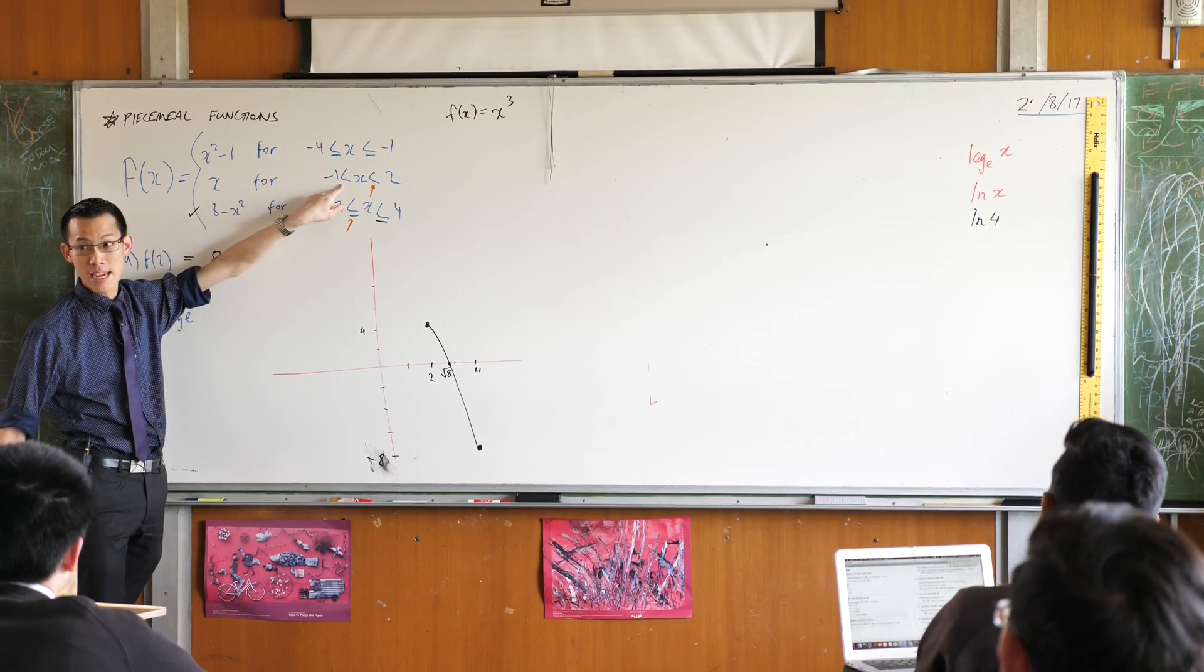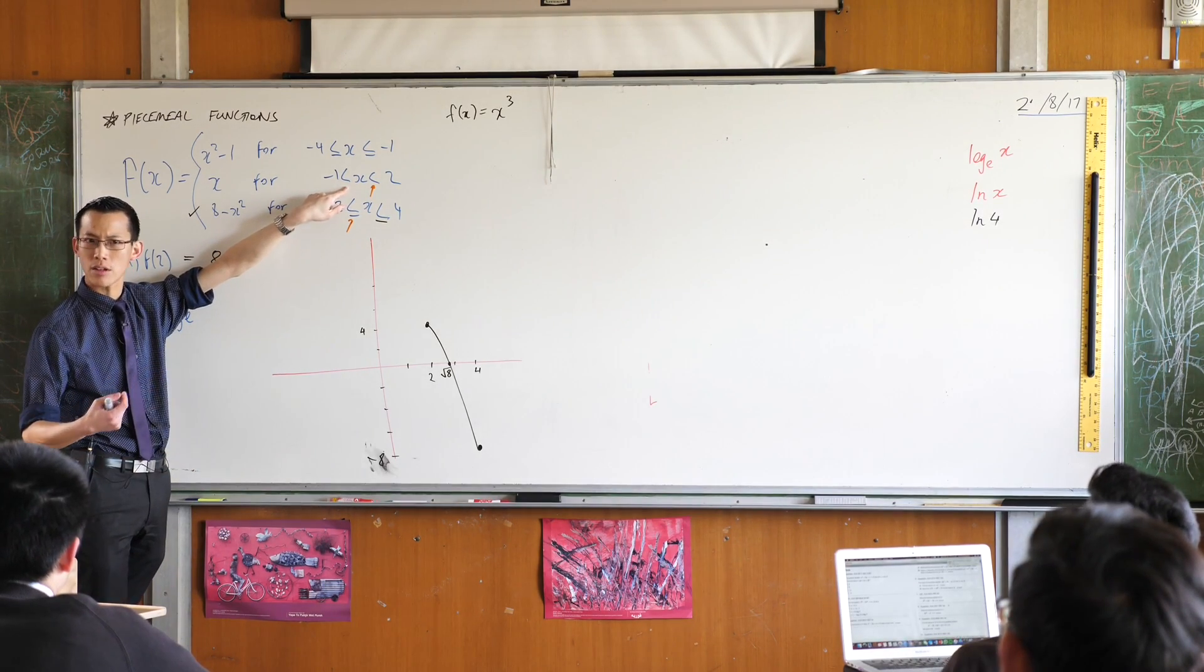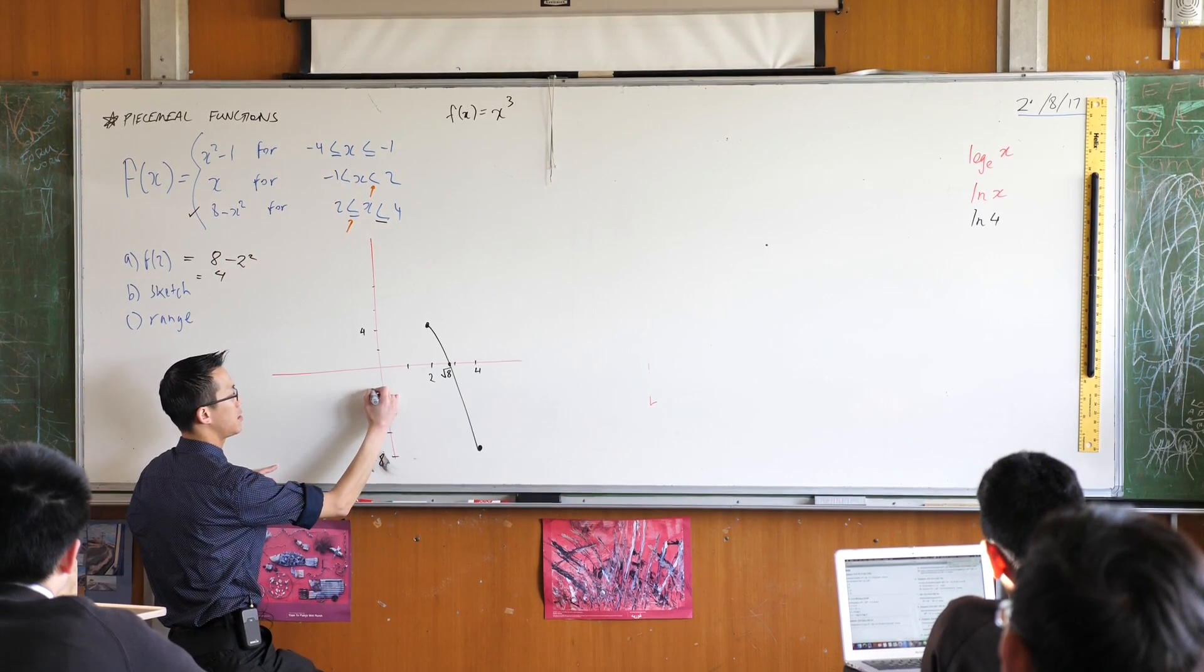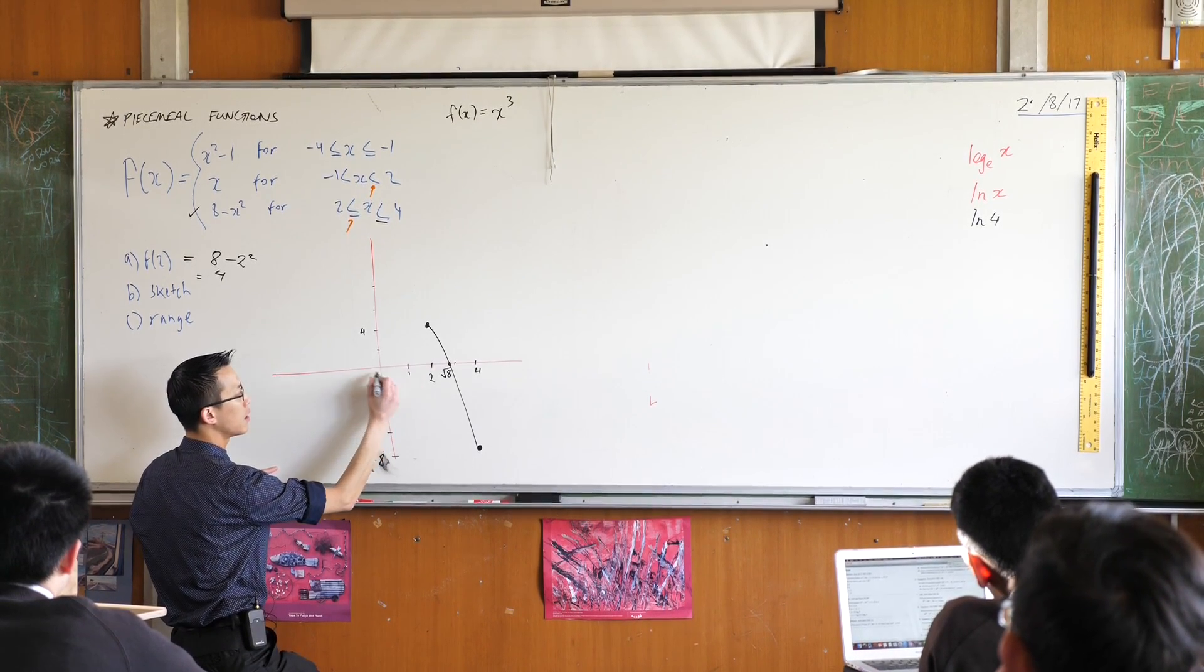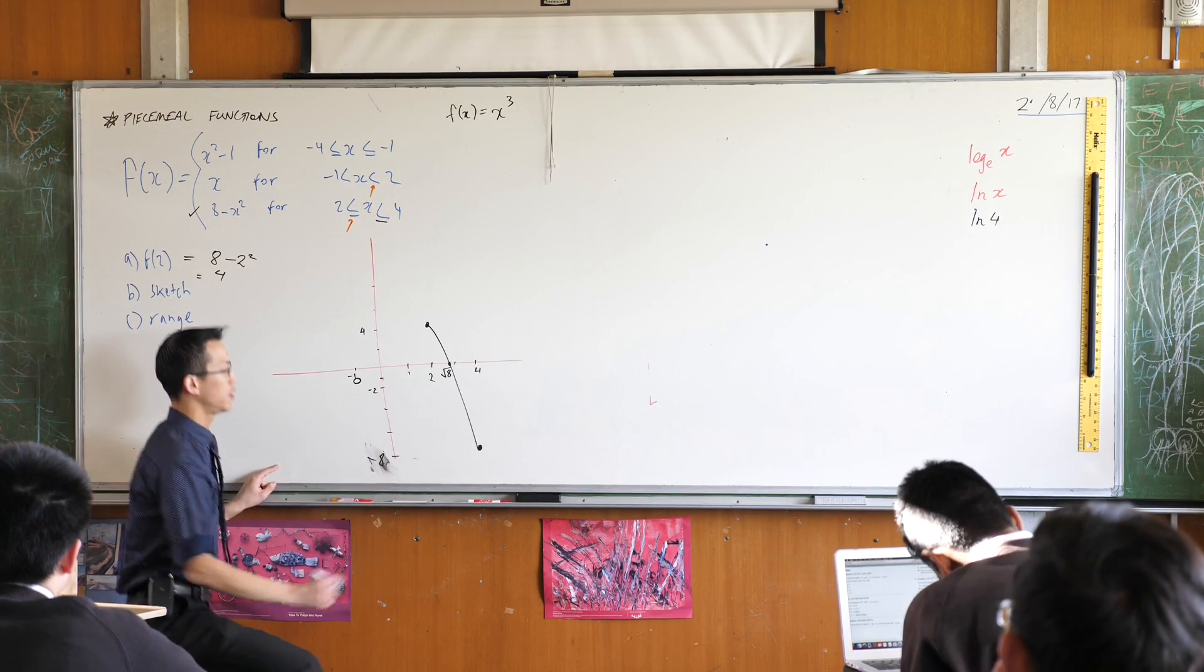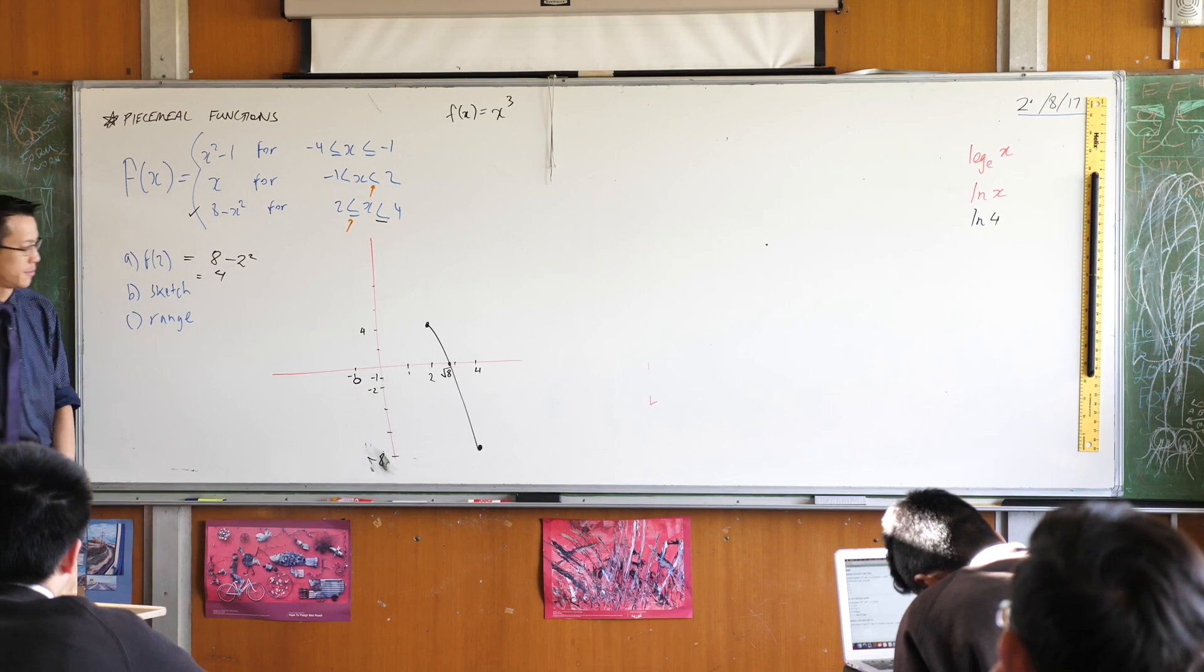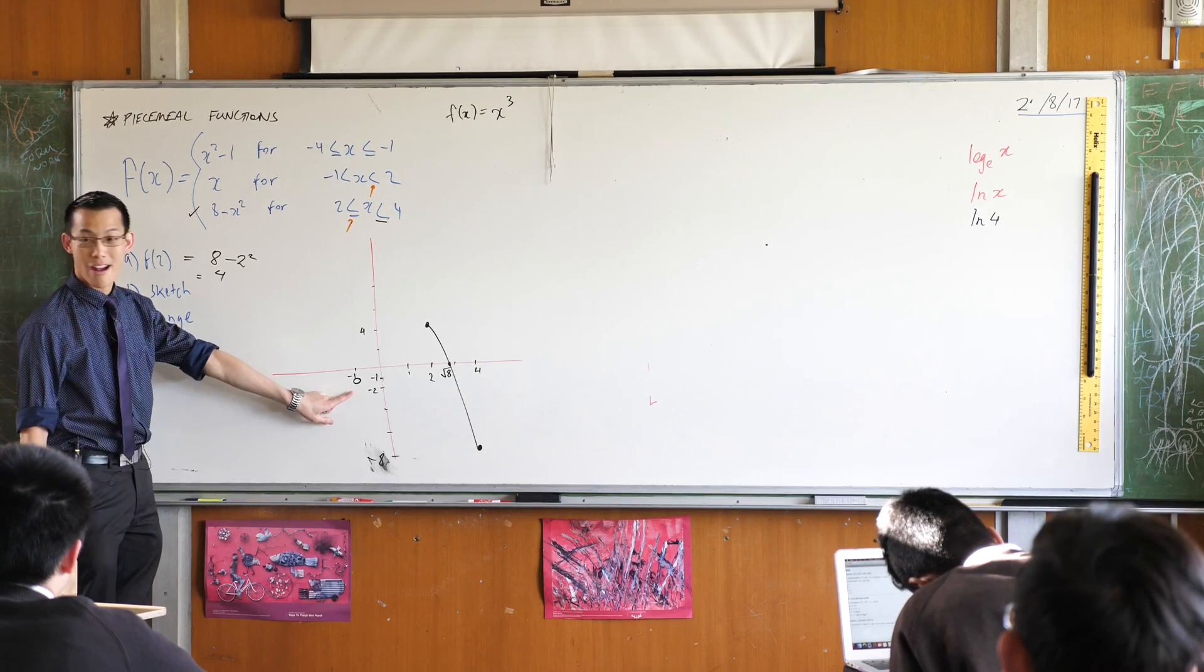But I would be, if I could evaluate that, I would be at y equals negative 1. So I'm going to put a hollow circle there because I'm not actually there. Does that make sense? So what do we say? This is negative 2, so negative 1 would be around here. There's my hollow circle. Are you alright with that? That's negative 1. Sorry my scales are different, but that way I can fit all my numbers on. So that's where I begin.